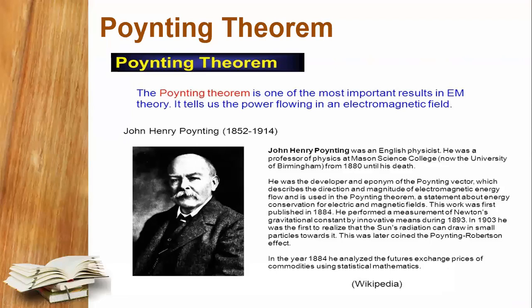In the Poynting theorem, how does this theorem come from? The Poynting theorem is one of the most important results in electromagnetic theory. It tells us about the power flowing in an electromagnetic field. We are interested in the amount of average power — the average power P — calculated in the electric as well as the magnetic field. This name 'Poynting' came from the scientist John Henry Poynting.